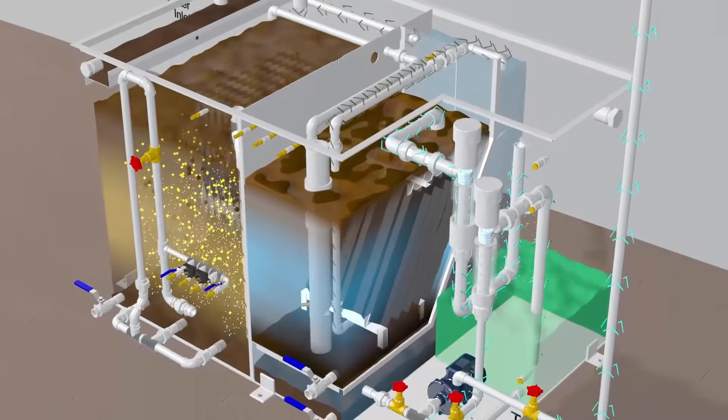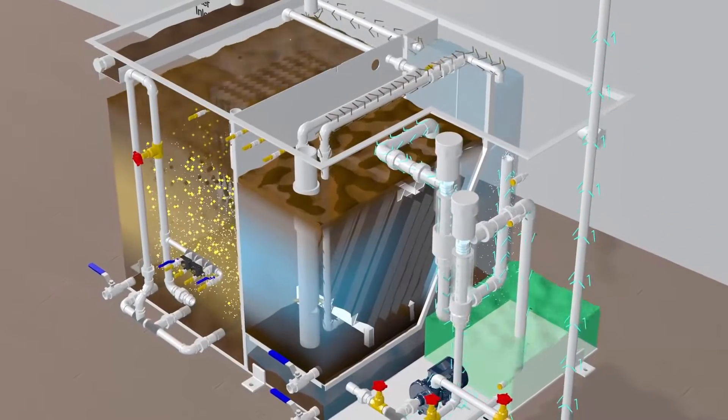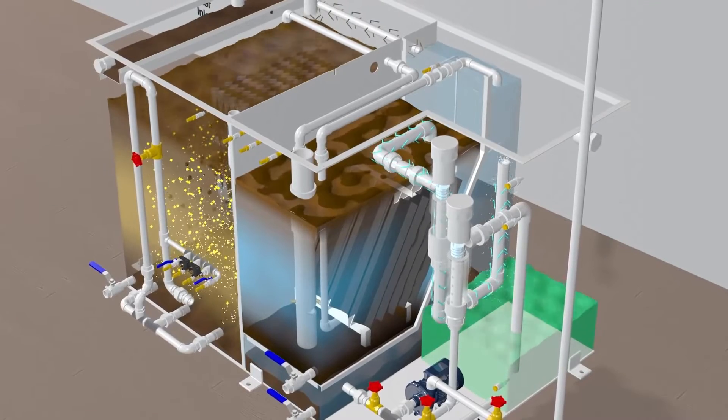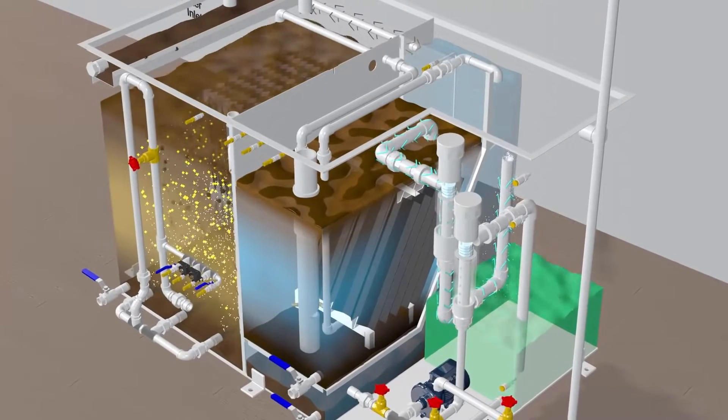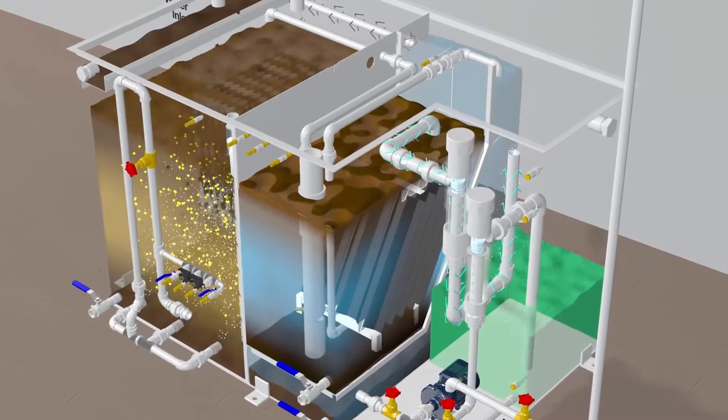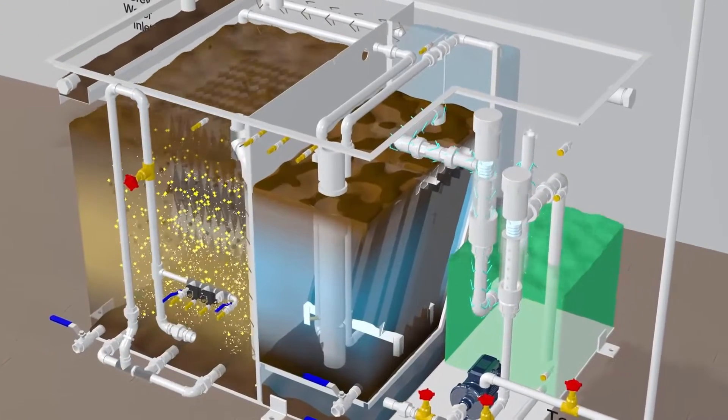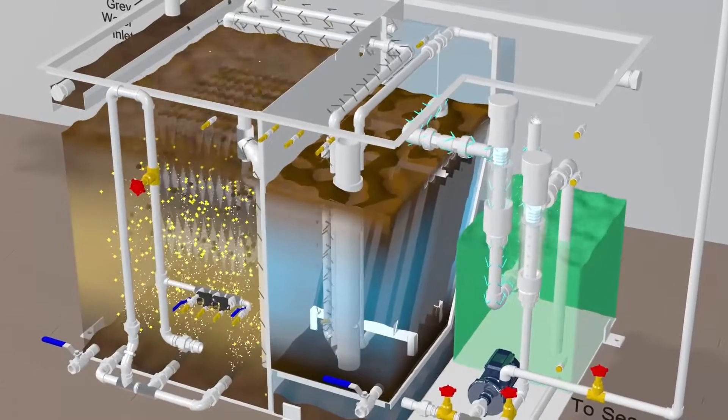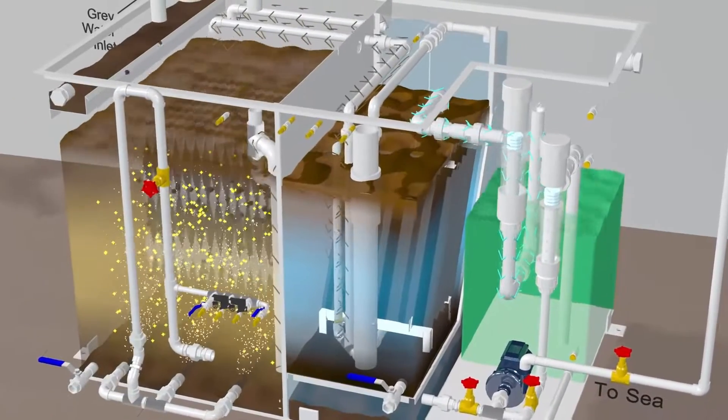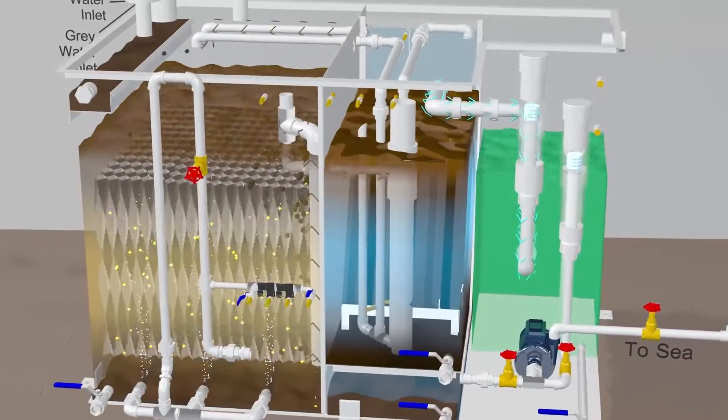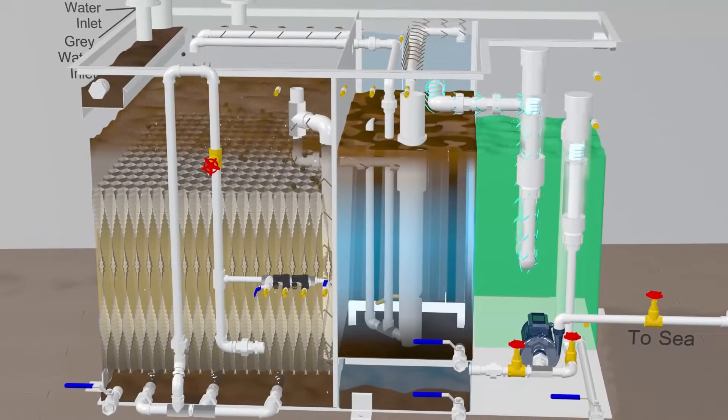Precautions for efficient operation of STP: The aeration blower is installed to run continuously as it helps the microorganisms to sustain and grow. Never switch off the blower as it will cause the death of microorganisms, which will in turn reduce its clarification efficiency and take days to grow microorganisms again.